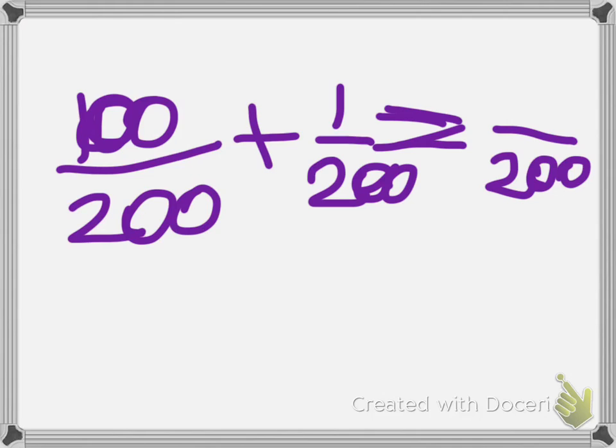So if you add one from one hundred, what answer would that be? Of course it would be one hundred and one over two hundred.